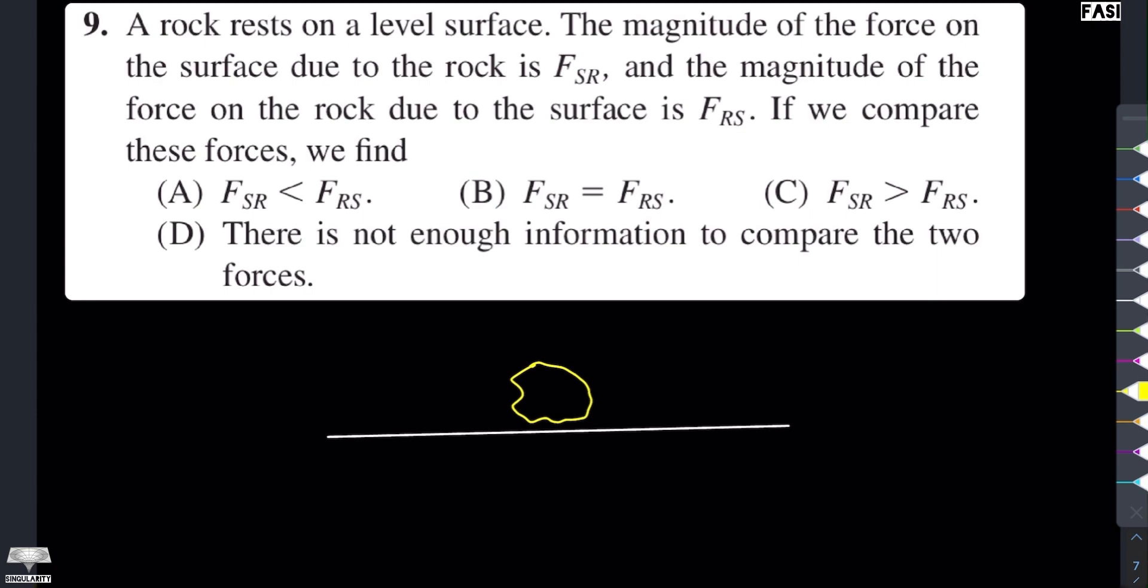تو اگر یہ ہمارے پاس ایک rock ہے جو اس level surface کے اوپر بیٹھی ہے یا پڑھی ہے تو اس rock کے اوپر جو force لگتی ہے surface کی وجہ سے اس کو انہوں نے FRS سے represent کیا ہے تو ہم اس force کو upward direction میں represent کریں گے کیونکہ یہ rock کے اوپر لگ رہی ہے surface کی وجہ سے so this is FRS